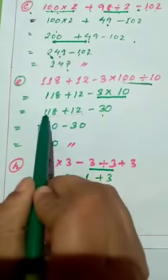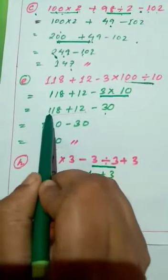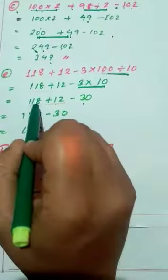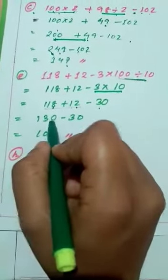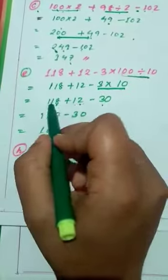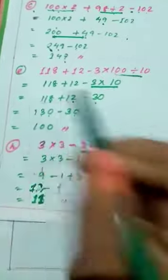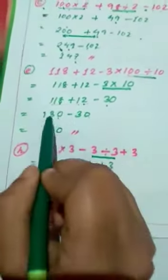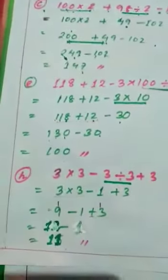Now we will do the addition work: 118 plus 12. You can add: 8 plus 2 is 10, write 0 and carry 1; 1 plus 1 is 2 plus 1 carried equals 3; and 1 stays, so we get 130. Then 130 minus 30: 0 minus 0 is 0, 3 minus 3 is 0, 1 stays — so the result is 100.